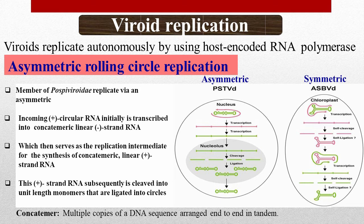Viroids usually replicate via two methods. Members of Pospviroidae replicate via an asymmetric rolling circle replication. The incoming plus-circular RNA is initially transcribed into concatemeric linear minus-strand RNA, which then serves as the replication intermediate for the synthesis of concatemeric linear plus-strand RNA. This plus-strand RNA is subsequently cleaved into unit-length monomers that are ligated into circles.